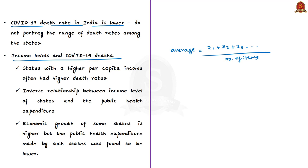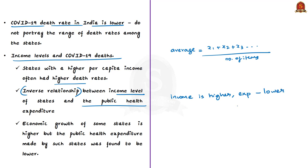This suggests that the wealth of a state has not acted as a shield against death for a section of its population. It is also found that there exists an inverse relationship between income levels of states and the public health expenditure they make — even though the economic growth of some states is higher, the public health expenditure made by such states was found to be lower. These states focused on growth as mere GDP numbers and not as development. Since income levels were not explaining the variation in death rates, the authors focused on data related to public health expenditure.